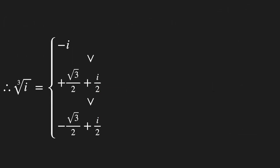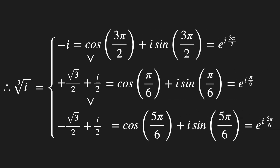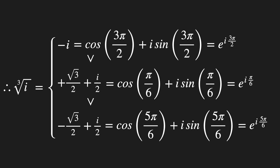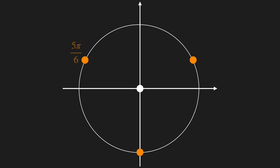The cubic root of i has three solutions. They correspond to the angles 3pi over 2, pi over 6, and 5pi over 6, which have a 120 degree, or 2pi over 3, angle separating them. The consequence is that these solutions split the circle into three equal parts.